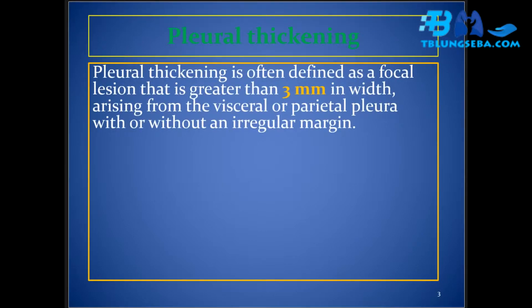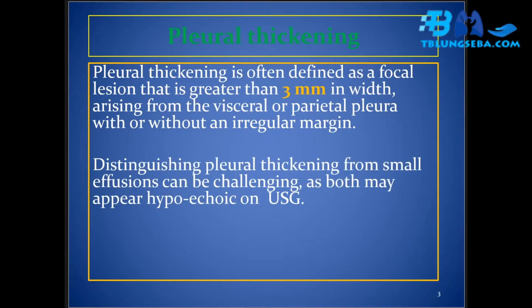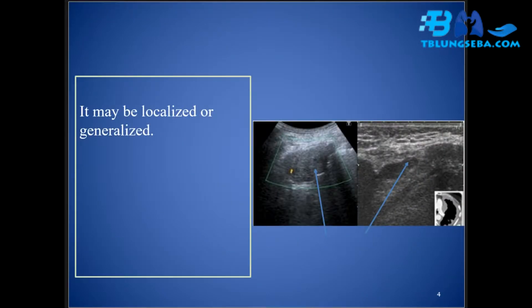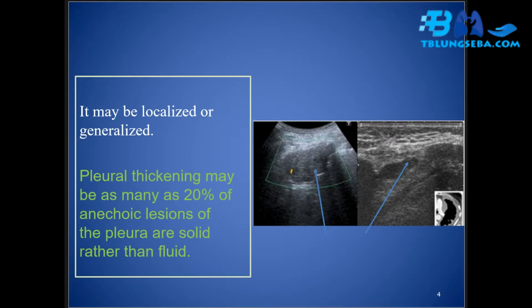Pleural thickening is often defined as a focal lesion greater than 3 millimeters in width arising from the visceral or parietal pleura, with or without an irregular margin. Distinguishing pleural thickening from small effusions can be challenging as both may appear hypoechoic on USG. Pleural thickening is not reliably detected on USG unless it is one centimeter or more, and may be localized or generalized. As many as 20 percent of anechoic lesions of the pleura are solid rather than fluid.